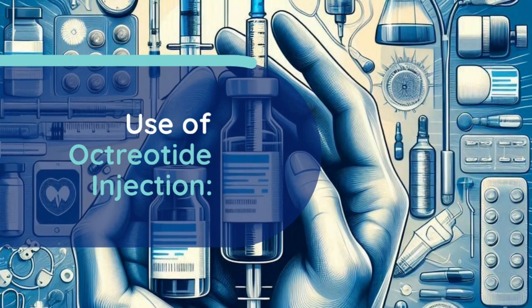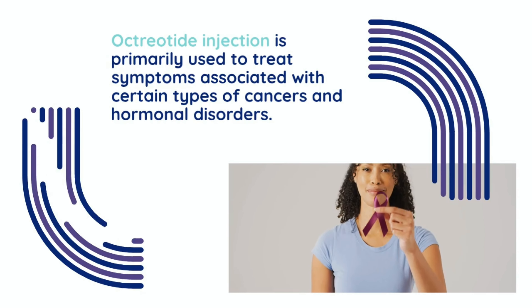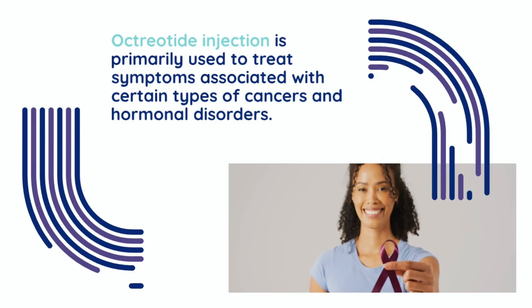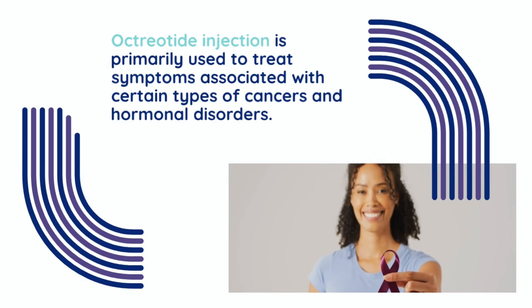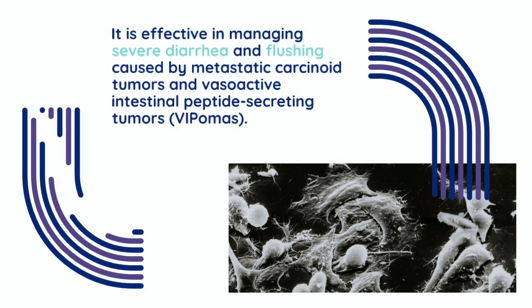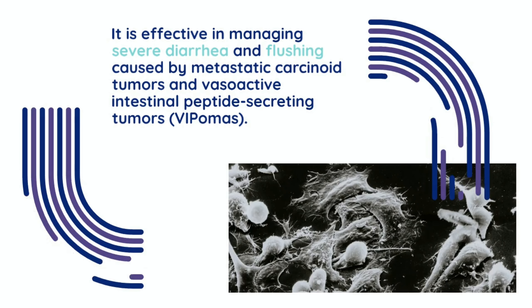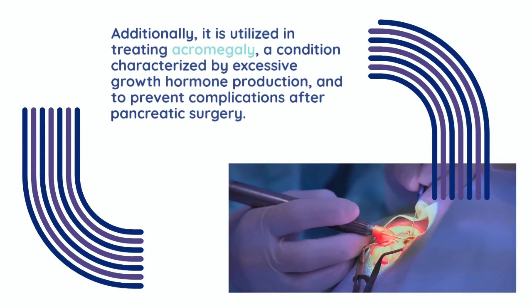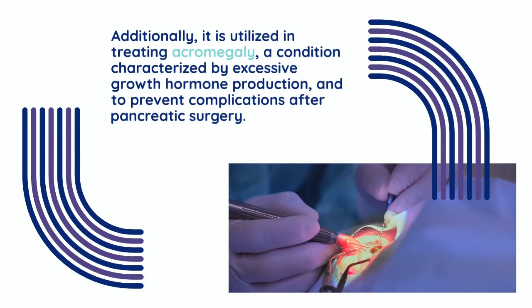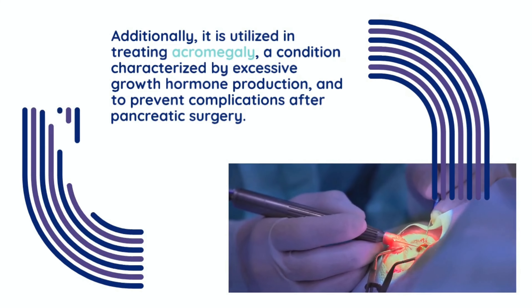Use of octreotide injection. Octreotide injection is primarily used to treat symptoms associated with certain types of cancers and hormonal disorders. It is effective in managing severe diarrhea and flushing caused by metastatic carcinoid tumors and vasoactive intestinal peptide-secreting tumors. Additionally, it is utilized in treating acromegaly, a condition characterized by excessive growth hormone production, and to prevent complications after pancreatic surgery.